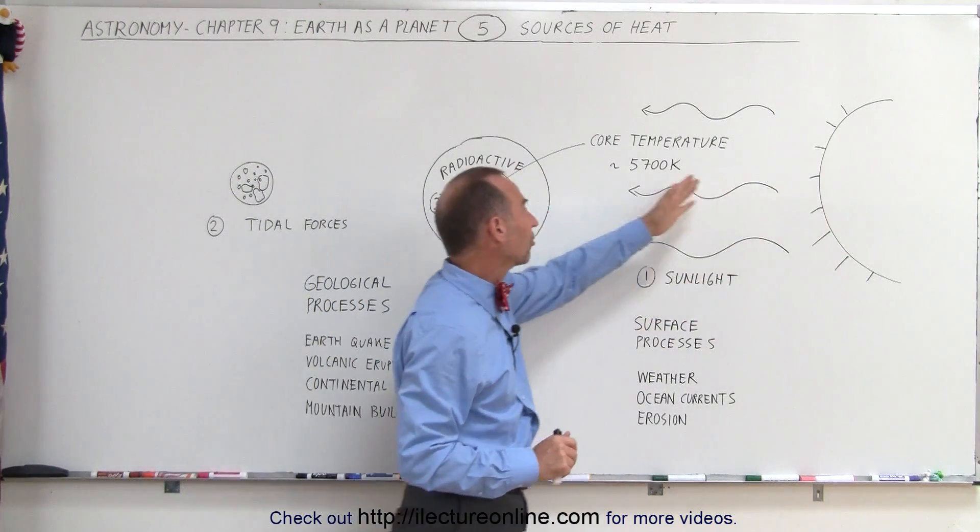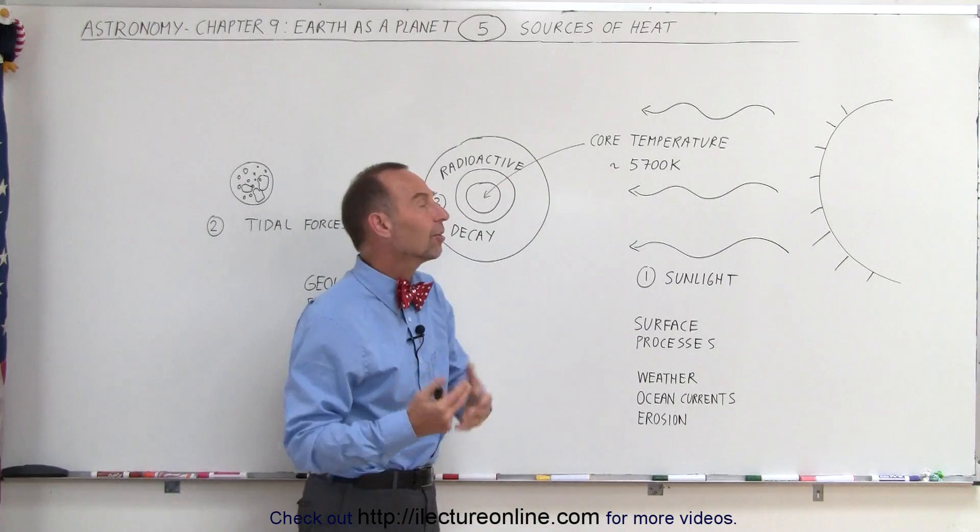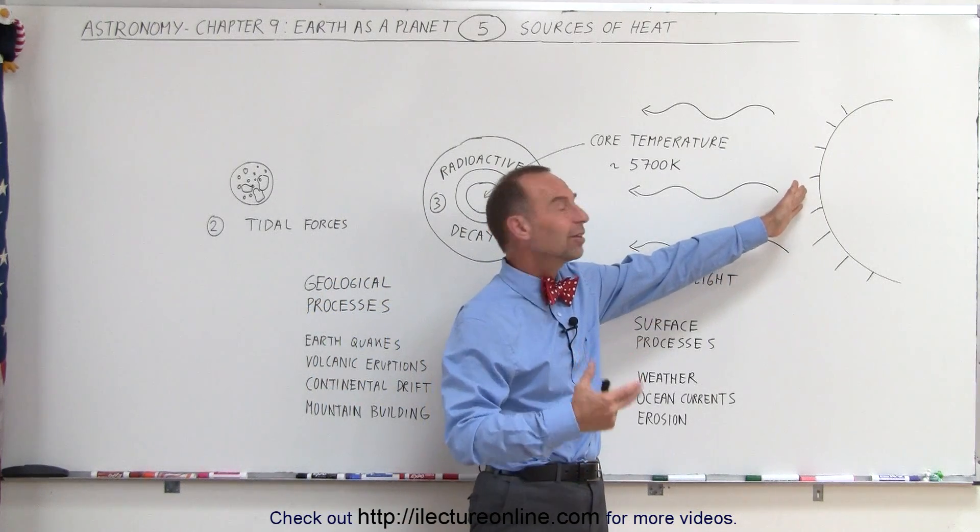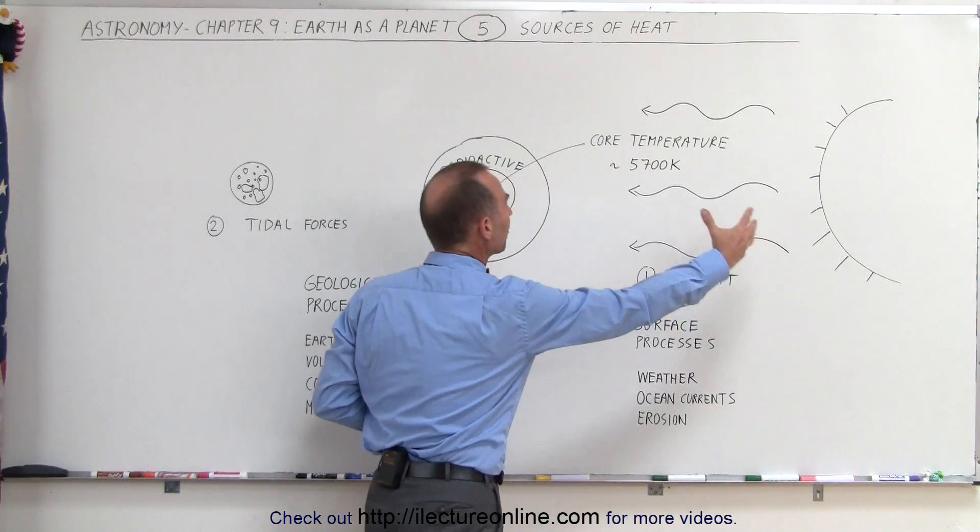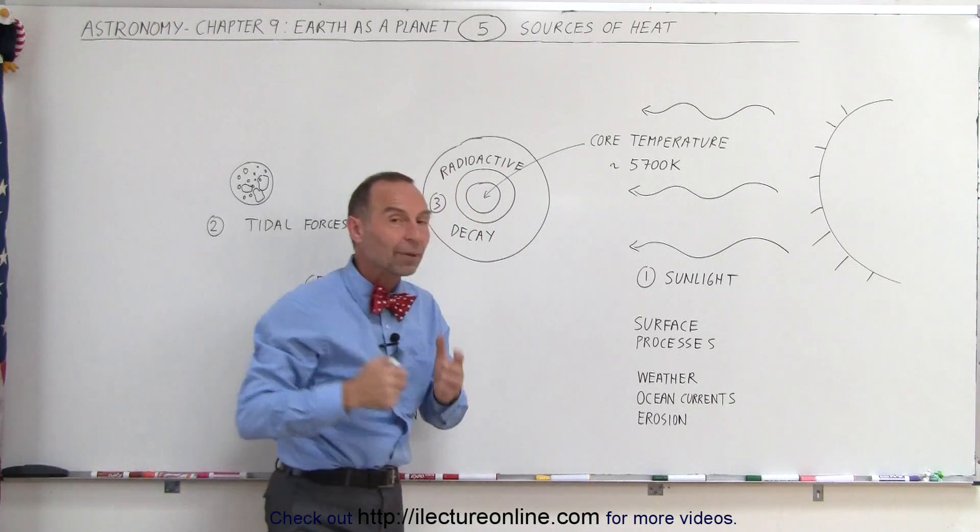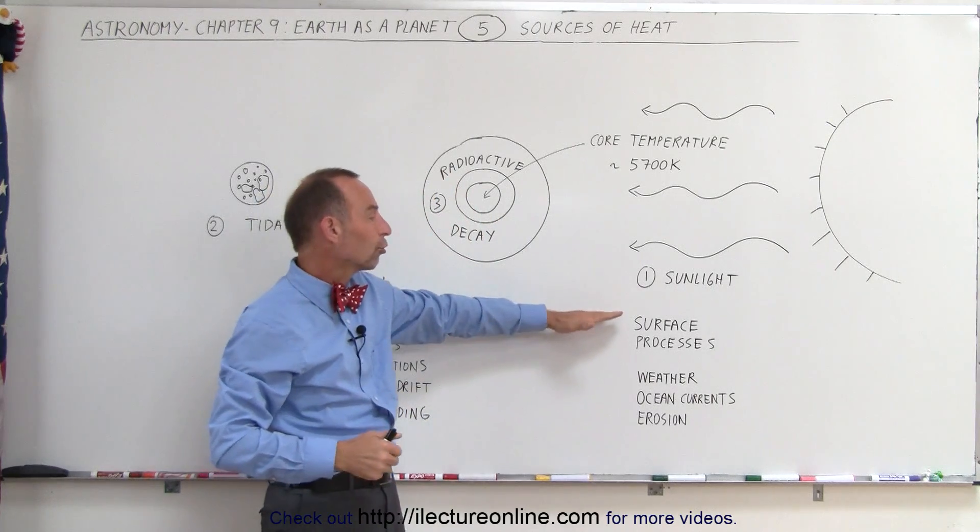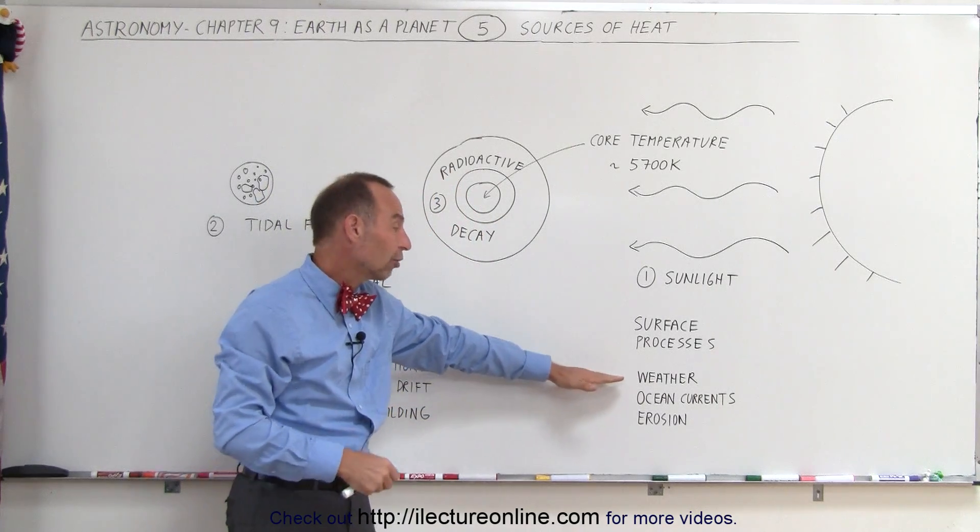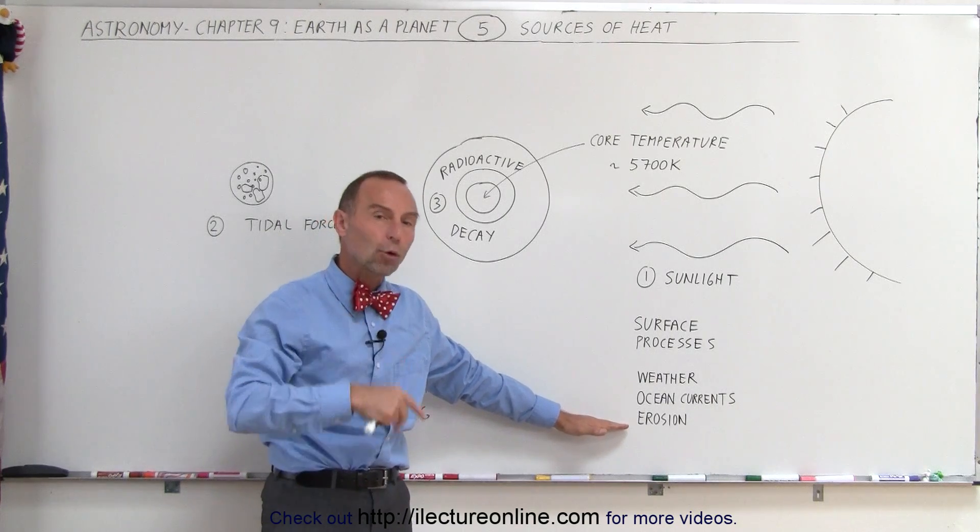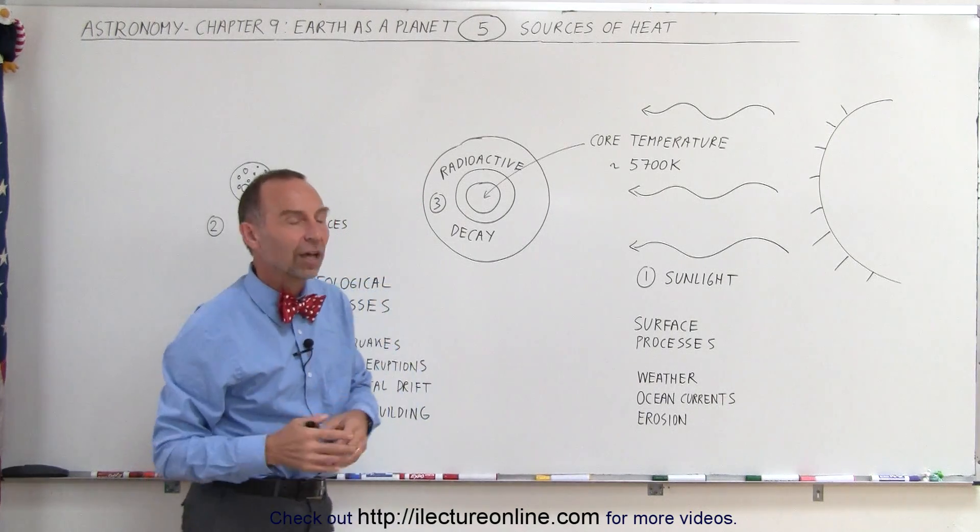The Sun's surface temperature at about 5,800 Kelvin drives an enormous amount of heat towards the Earth, heating up the atmospheres and the oceans. And because of that, we have what we call surface processes, such as the weather, the ocean currents, and an enormous amount of erosion because of the hydrological cycle.